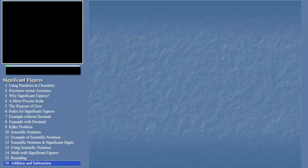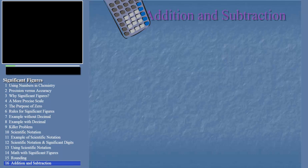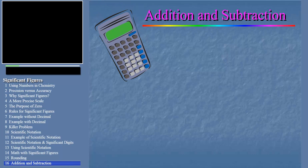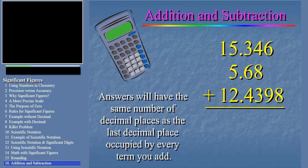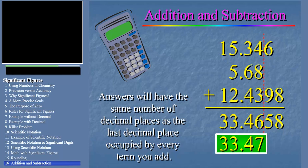Just to finish our story, you need to be aware that a different rule applies to assigning significant figures when we add or subtract. In this case, your answer will have the same number of decimal places as the last decimal place occupied by every term you add or subtract. For example, let's look at this problem here. Here's what your calculator will give you. The last decimal place that appears in all of these numbers is the second decimal place, so in our answer we should have two decimal places. We round the 6 to a 7 because of the 5 to the right of it, and the answer is 33.47. Now the same rule applies to subtraction, and you'll learn these rules better as you practice.